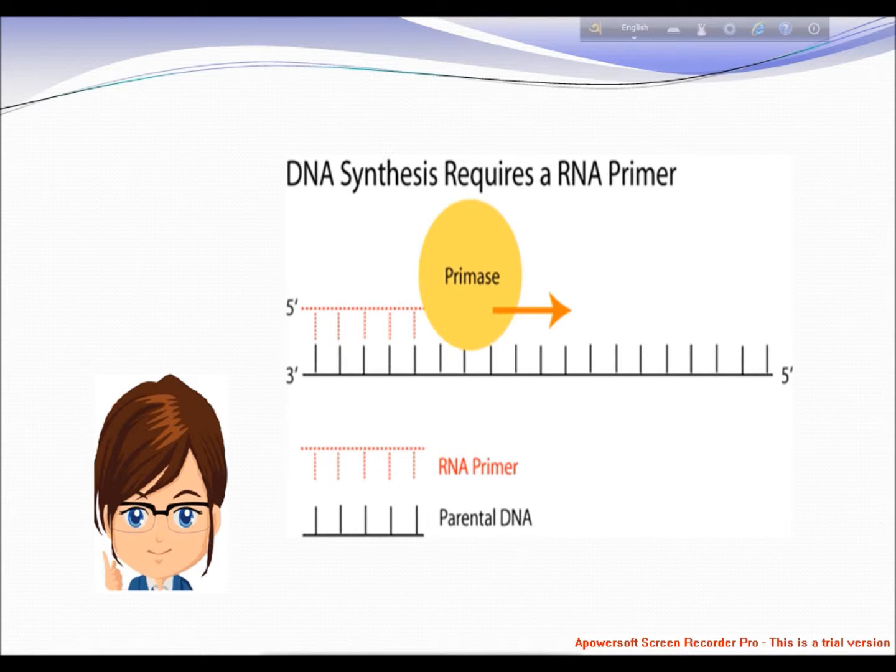Primase binds to DNA helicase, forming a complex called the primosome. Primase is activated by DNA helicase, where it then synthesizes a short RNA primer approximately 11 plus or minus 1 nucleotides long, to which new nucleotides can be added by DNA polymerase.